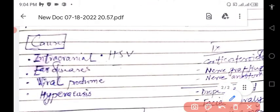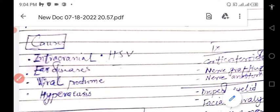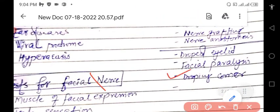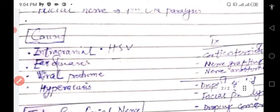The patient will complain of drooping of the eyelid, facial muscle paralysis, and drooping of the corner of the mouth in facial nerve palsy.